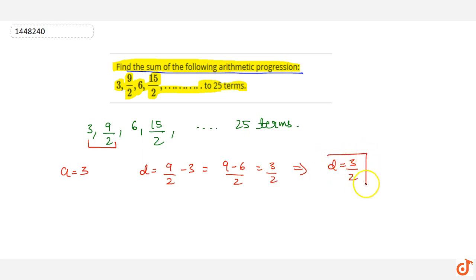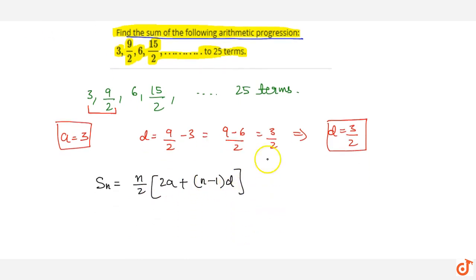The common difference value in this AP is 3 by 2. Now we'll use the formula for the sum of n terms of an AP, which is the standard formula: S_n equals n by 2 times 2a plus n minus 1 times d.